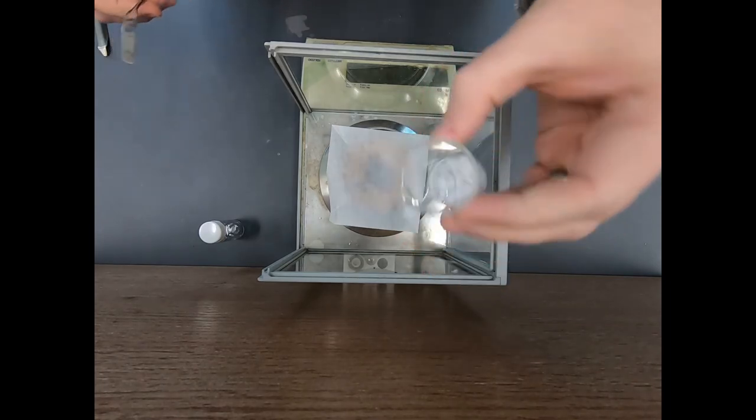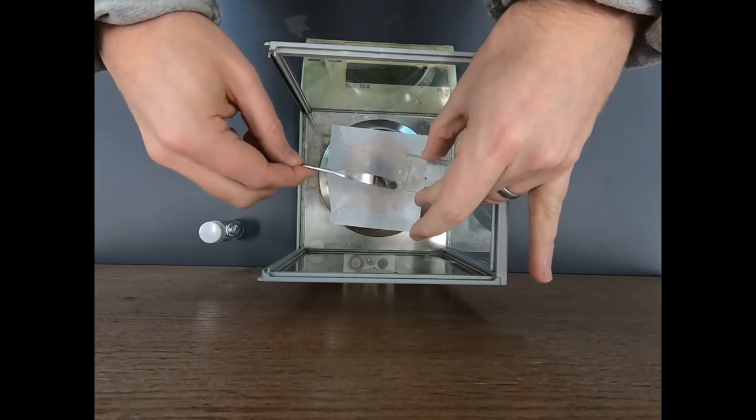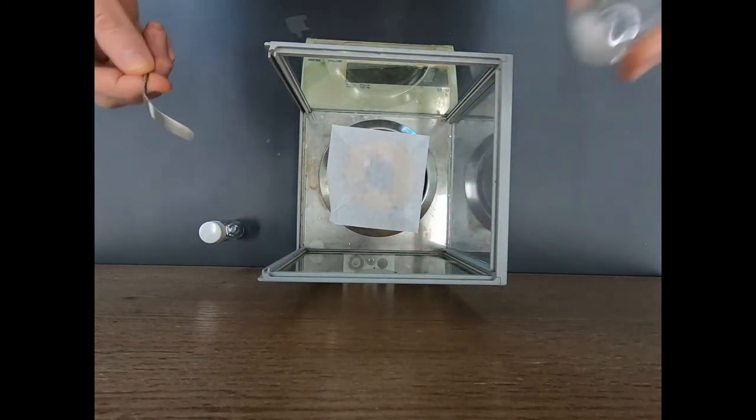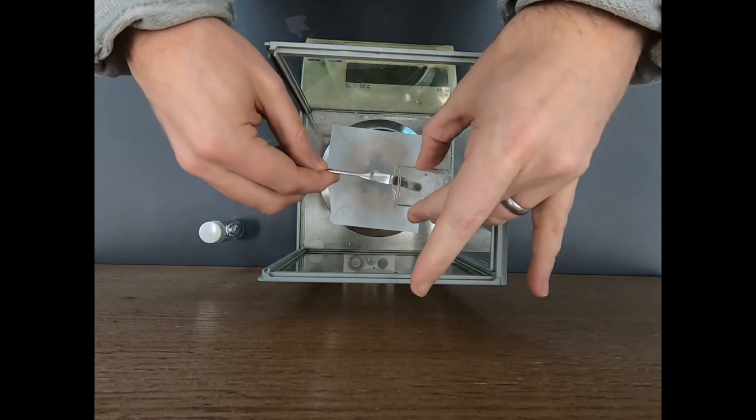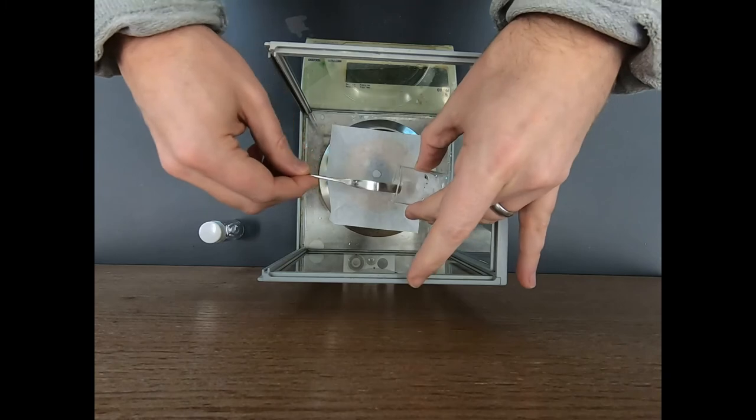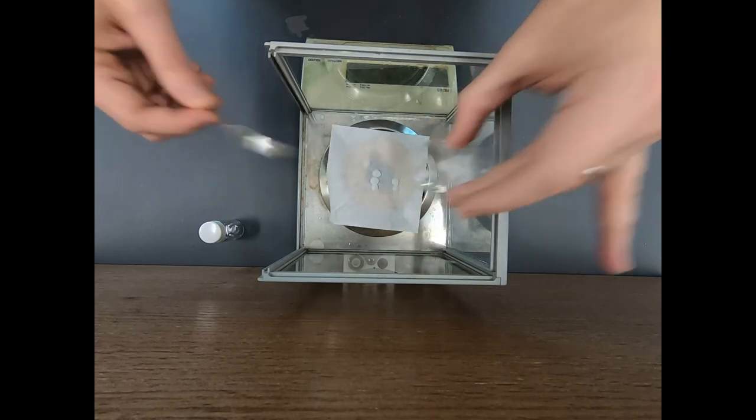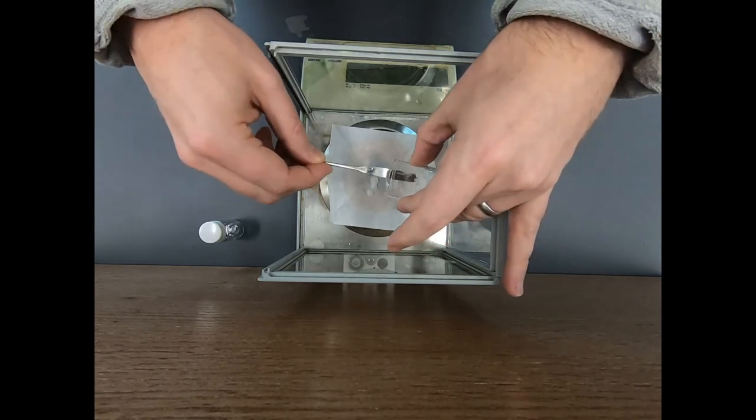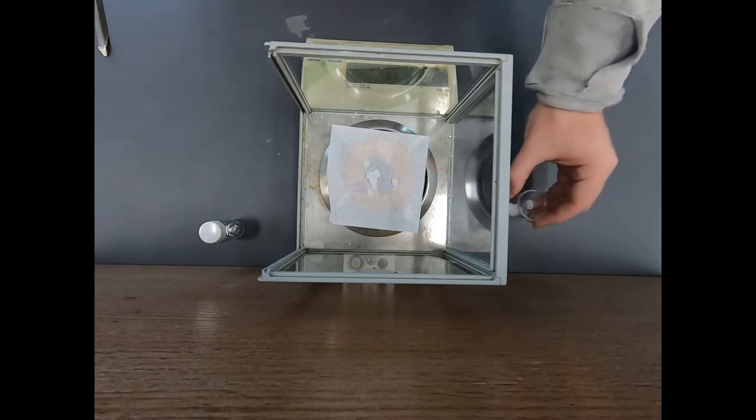So here I have a small beaker with some KOH. KOH is kind of a pain to weigh out accurately because each little piece weighs about 140 mg. So it's hard to be super precise. We're not going to worry about being super precise. We just need at least 980 mg. That's 993 mg.